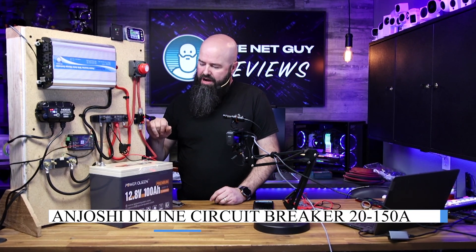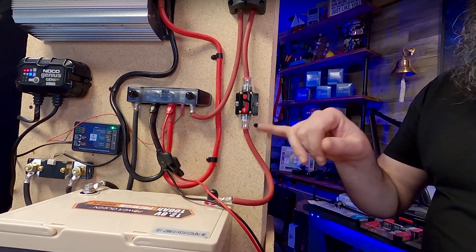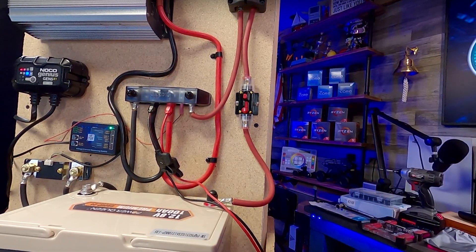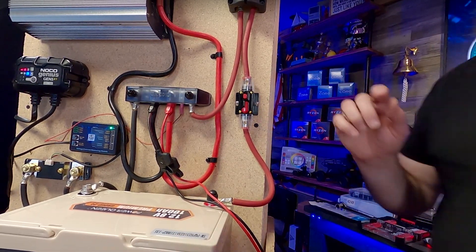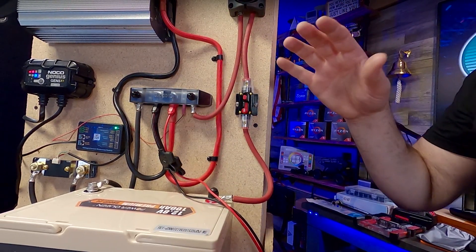If I'm drawing too much current, over 150 amps in my situation, and I'm doing it continuously, these all have different trip settings. I'm going to want something to help protect the battery and the rest of my system from over current and under voltage.